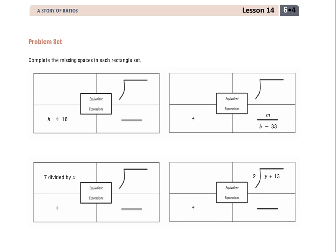In the direction state, complete the missing spaces in each rectangle set. Now, when I look through, I have to figure out what goes in each of the four boxes that I have here, and I'm going to look at some of the other ones to see.